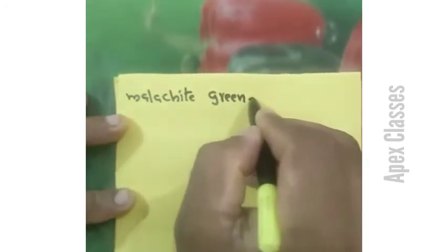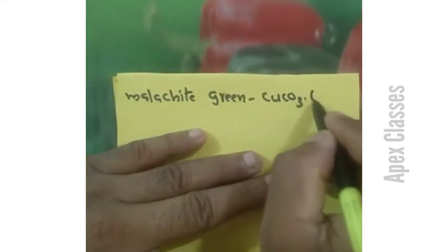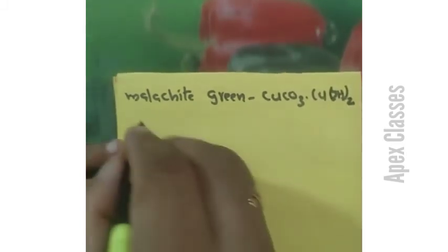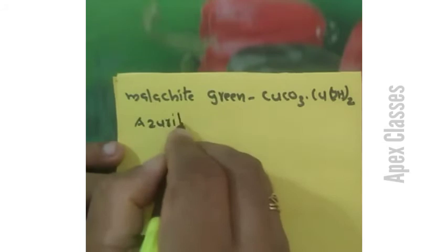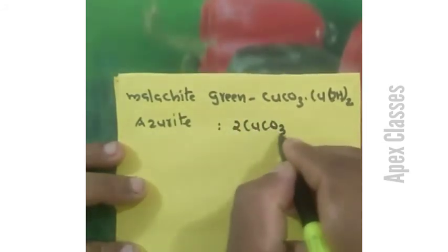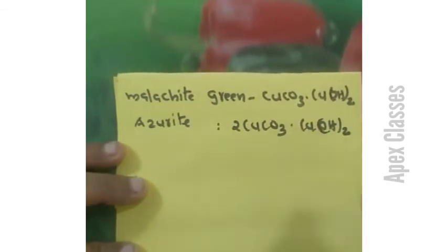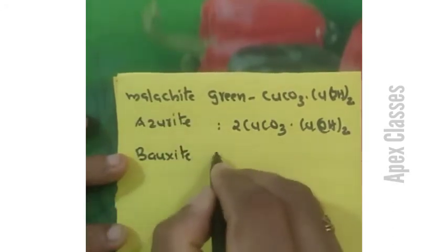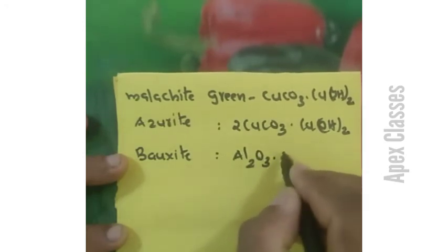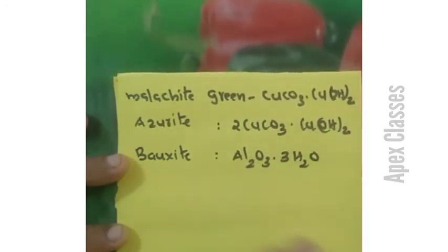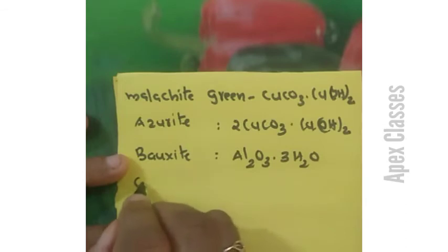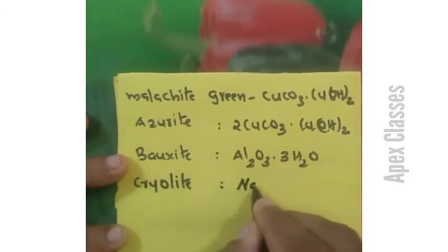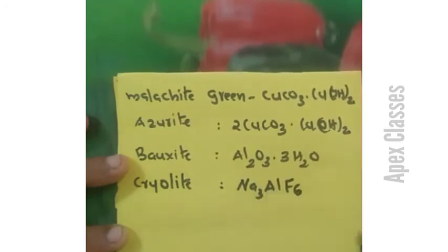Malachite Green is Cu3(CO3)2(OH)2, also written as 2CuCO3·Cu(OH)2. Bauxite is Al2O3·3H2O. Cryolite is Na3AlF6.